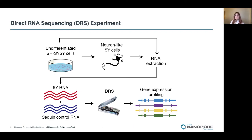The synthetic RNA controls known as sequins come in two different mixes — mix A and mix B — and each mix contains the same transcripts but they're present in different concentrations between the two mixes, simulating changes in expression. This allows us to test our quantification accuracy and also our ability to detect differential expression.